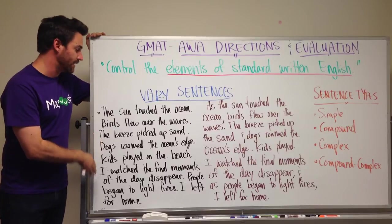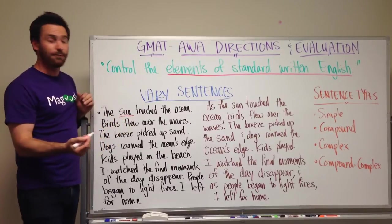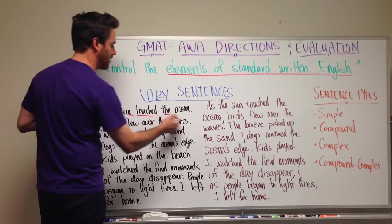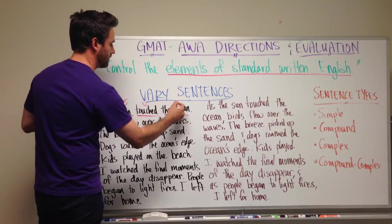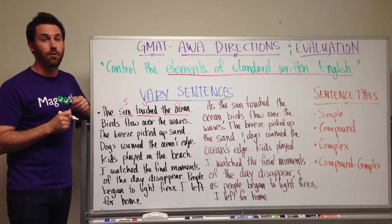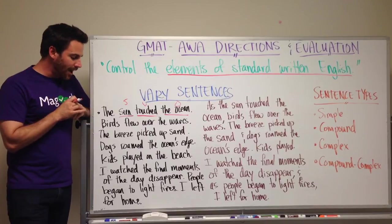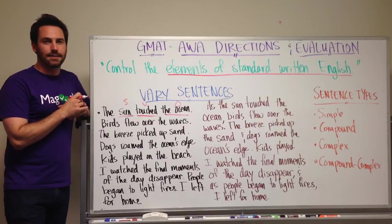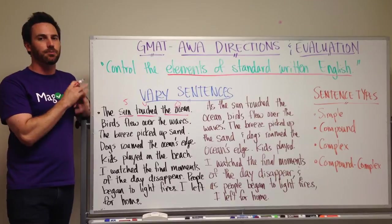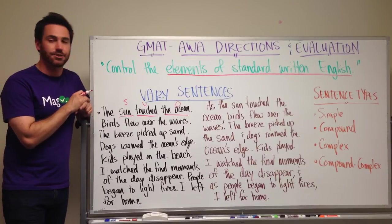In all of these sentences, we're beginning with a subject — like 'sun' — and then we have a verb, 'touched,' and then an object, 'the ocean.' So: subject, verb, object. Very standard form for English sentences. But there's not a lot of variety, and it's not very interesting to read. It has a very repetitive, almost monotone sense to it.